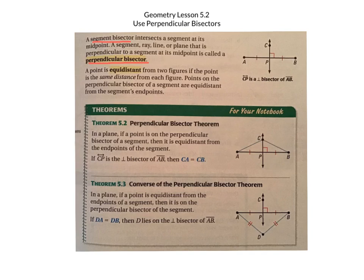In a plane, if a point is on the perpendicular bisector of a segment, then it is equidistant from the endpoints of the segment. To clarify, CP is the perpendicular bisector, and the point C is on that line. So that means we know it is equidistant from each of the endpoints — CA is congruent to CB.